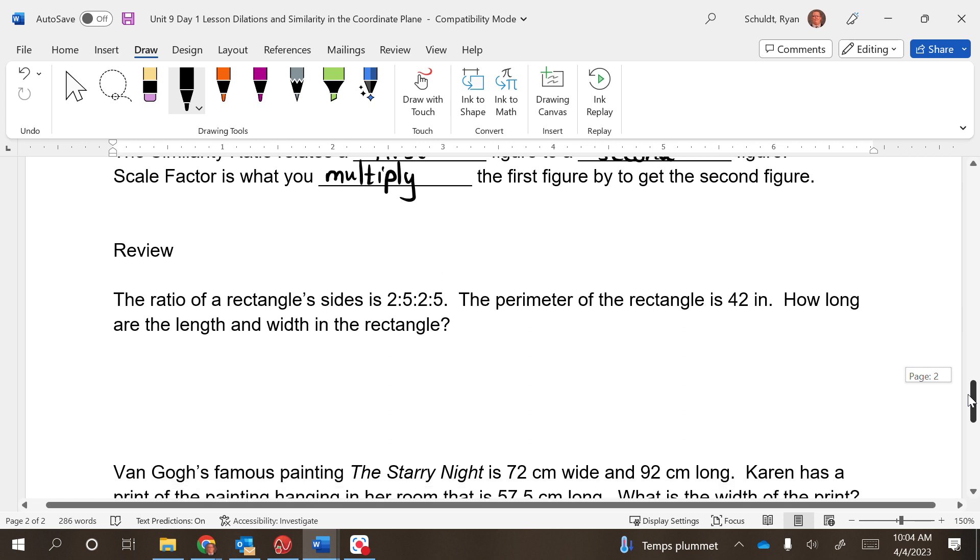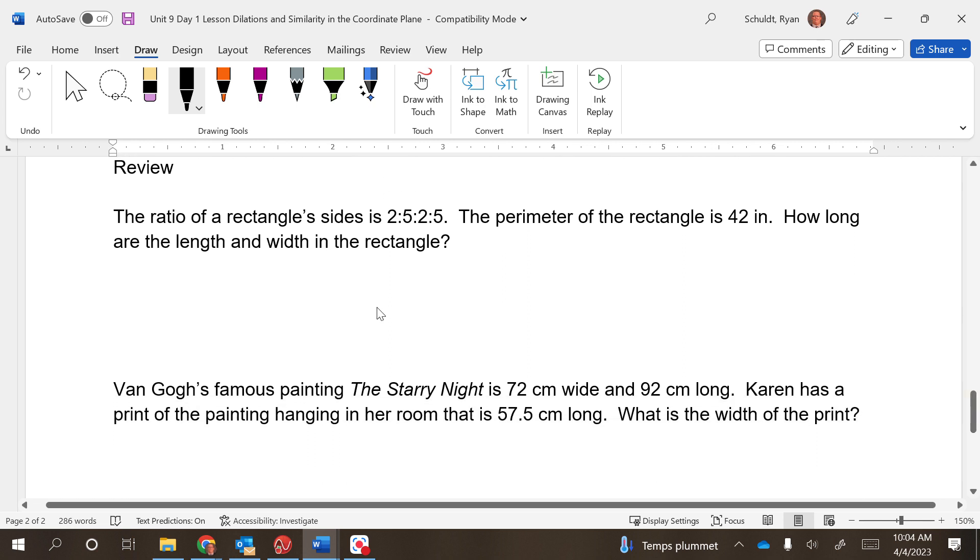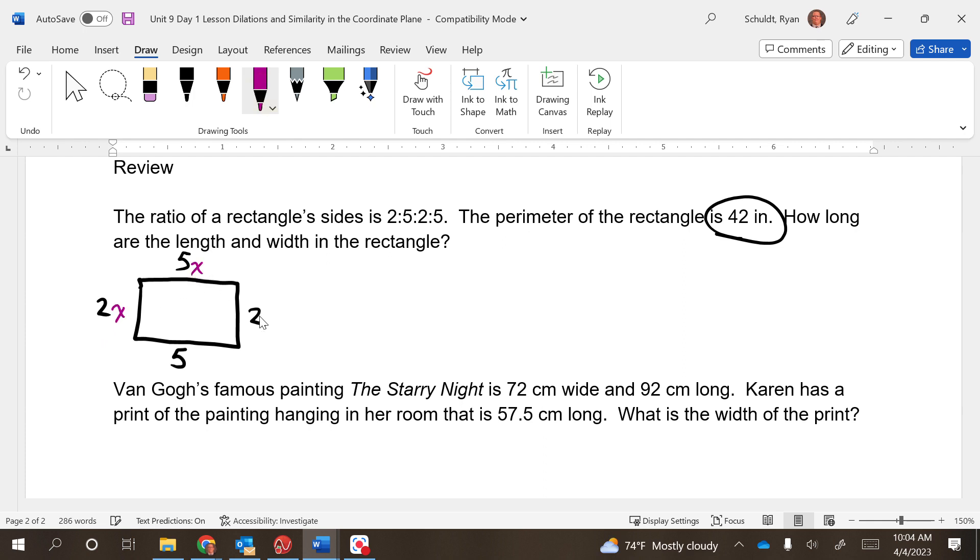Let's do a little review. The ratio of a rectangle's sides is 2 to 5 to 2 to 5. So if we have a rectangle here, it's going to be like 2 to 5 to 2 to 5. The perimeter of the rectangle is 42. How long are the length and width? Now if I were to add these up, 2 plus 5 plus 2 plus 5, would that give me 42? No it doesn't, so that means there's an x after each of these: 2x, 5x, 2x, 5x. So I need to add that up. 2x plus 5x plus 2x plus 5x equals 42. That's going to give us 14x equals 42. Divide by 14, and we would get x equals 3.